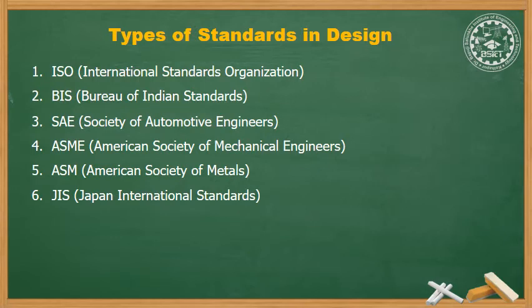Types of standards in design: 1. ISO - International Standards Organization. 2. BIS - Bureau of Indian Standards. 3. SAE - Society of Automotive Engineers. 4. ASME - American Society of Mechanical Engineers. 5. ASM - American Society of Metals. 6. JIS - Japan International Standards. These are some standards which are used while designing a component or member in machine design.